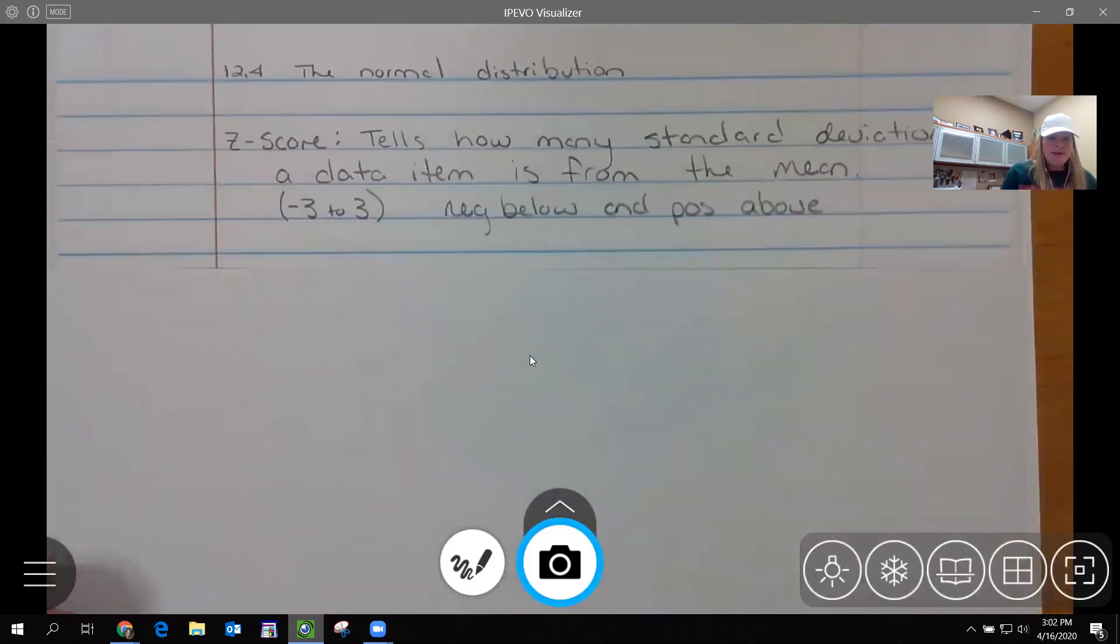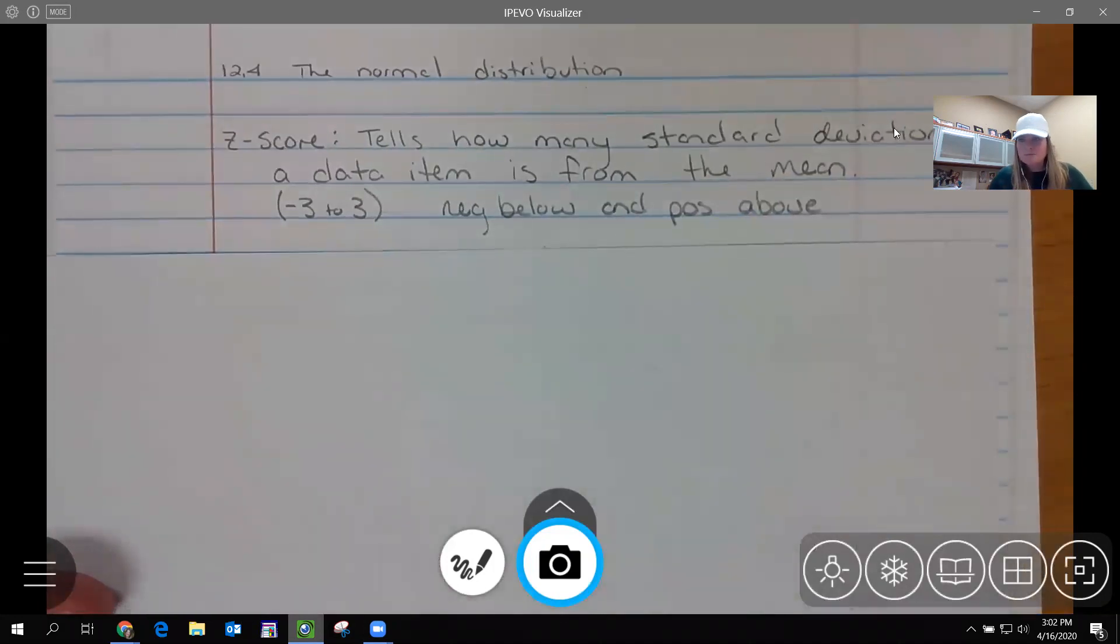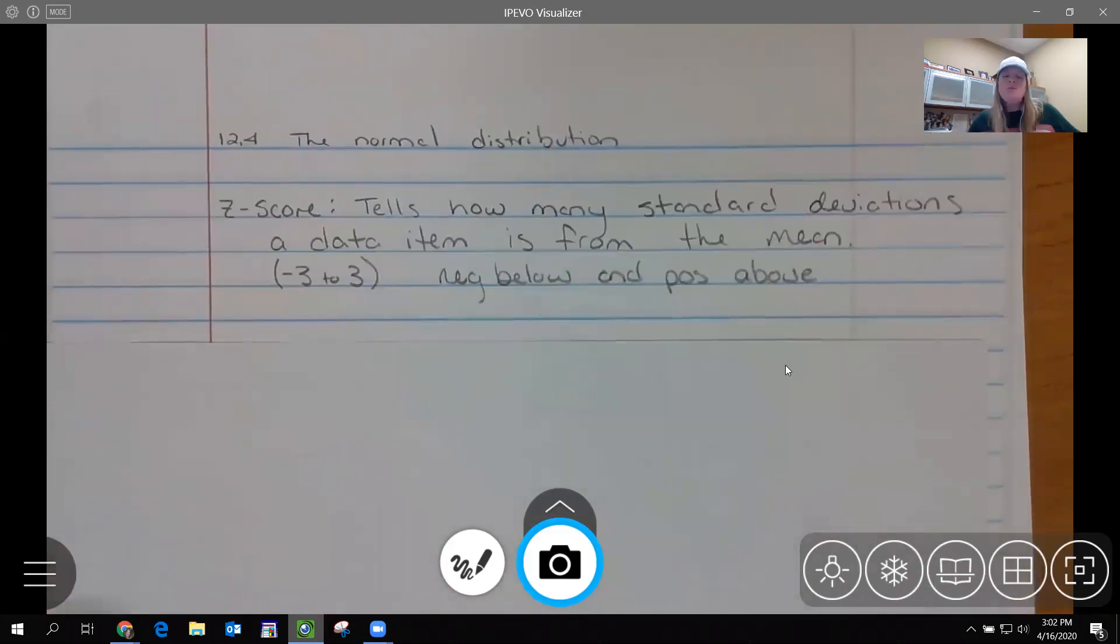The first thing we're going to learn about is our Z-score. My picture's in the way. So the Z-score tells us how many standard deviations you are away from the mean. If I am up two standard deviations from the mean, I'm way above the average. If I'm at negative three standard deviations, I am way, way, way lower than the mean.